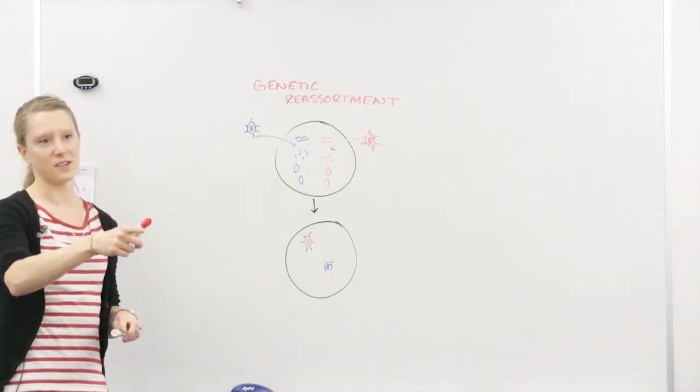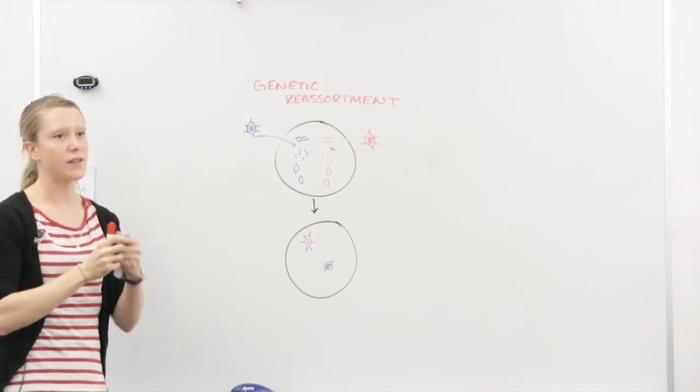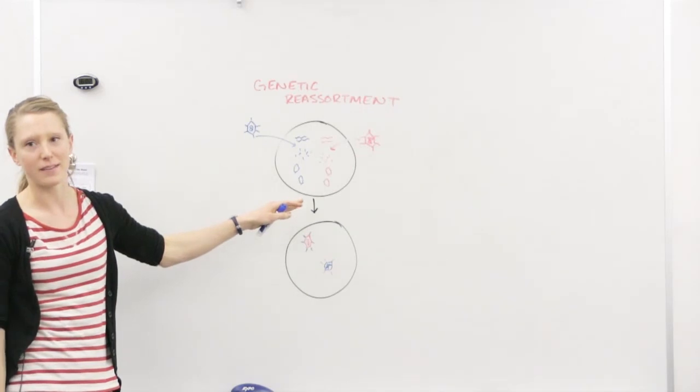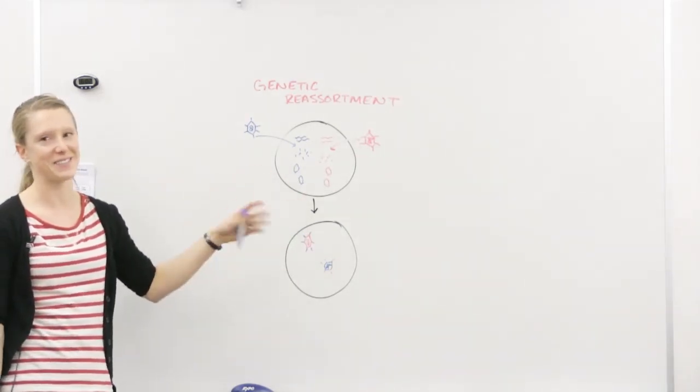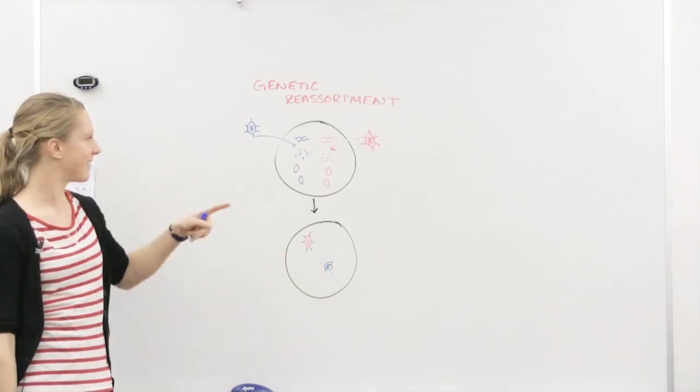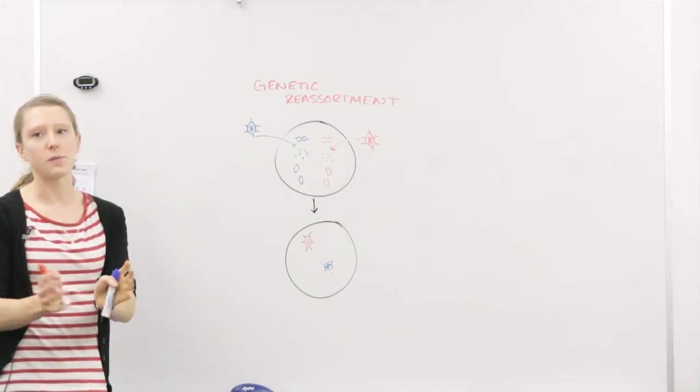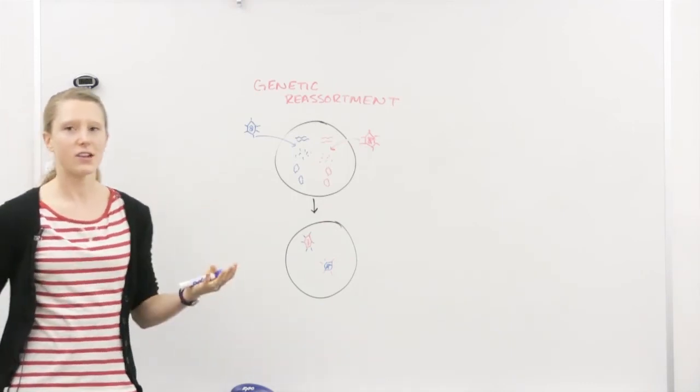Bacteria, first of all, don't go into host cells. They can, but do they go inside to replicate? Do they uncoat and let out their genetic material? No, so how would this ever happen for a bacteria? Does that make sense? See, you got it. Just have to think. I wasn't going to give you any more hints. Okay? So what a virus does is it goes in a host cell and it breaks open and lets out the genetic material so it can get mixed up. But bacteria don't do that.